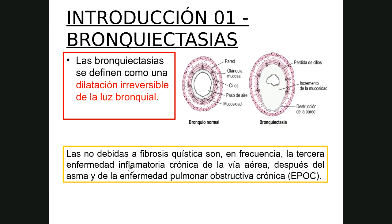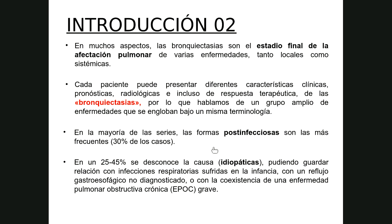Las bronquiectasias se dividen en dos grandes grupos: las producidas por una enfermedad congénita llamada fibrosis quística, y las no debidas a fibrosis quística. Son la tercera enfermedad inflamatoria crónica de las vías aéreas, después del asma y el EPOC. En muchos aspectos son el estadio final o cicatrices de una afectación pulmonar por múltiples enfermedades tanto locales como sistémicas, incluyendo enfermedades reumatológicas.